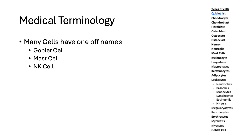This is a reminder that learning prefixes and suffixes is a helpful tool because we often reuse these words. Myo, osteo, chondro — you're going to see those all over the place. Cyte, blast — you're going to see them in a lot of places. And it doesn't work just for types of cells; it works for the entire course.